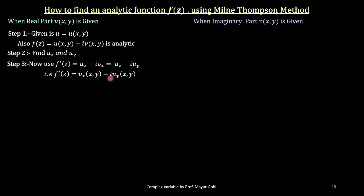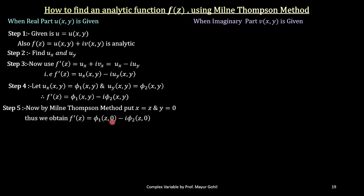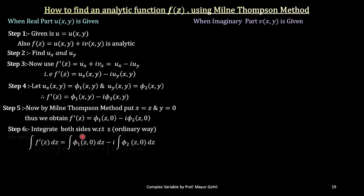Step number four is relabeling these functions: u_x equals phi₁(x, y) and u_y as phi₂(x, y). When we relabel, f'(z) becomes phi₁(x, y) minus i times phi₂(x, y). Now the Millen-Thompson method enables us to put x equals to z and y equals to 0. So f'(z) becomes phi₁(z, 0) minus i times phi₂(z, 0). Then in the next step we integrate both sides in an ordinary way with respect to z to get the final answer.